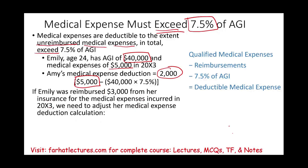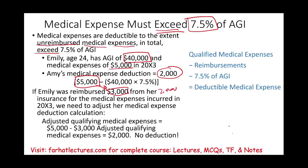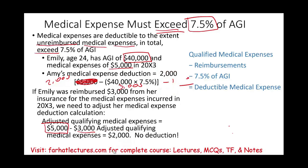Now assume Emily was reimbursed: the insurance paid her $3,000 of the $5,000 she incurred. That leaves $2,000 unreimbursed. Then, $2,000 minus the $3,000 threshold equals negative $1,000, so she gets no deduction because the $2,000 is less than 7.5% of her adjusted gross income.